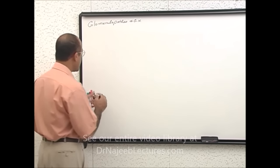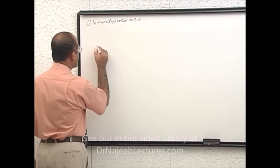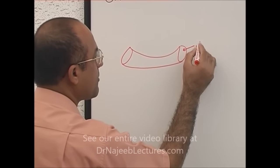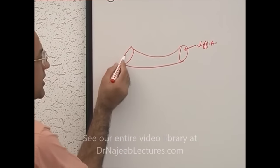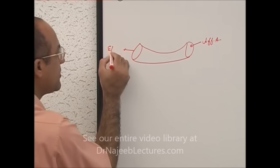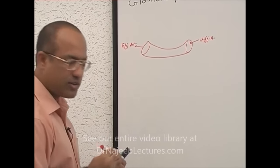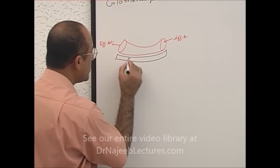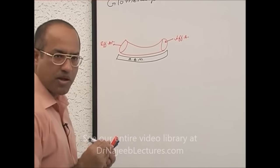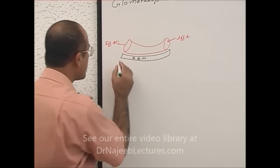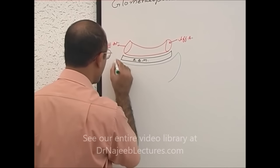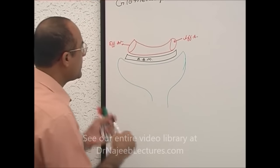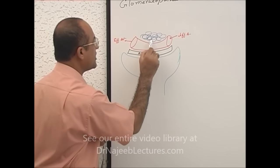Here is a glomerular capillary. Blood is coming from the afferent arteriole and going out to the efferent arteriole. Here is your glomerular basement membrane — GBM — and here is your Bowman's capsule or urinary space. And here is connective tissue which is called the mesangium.